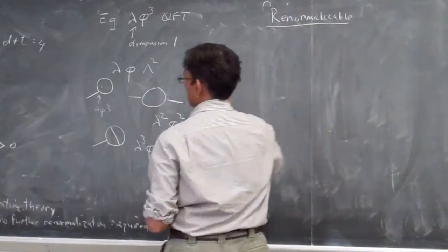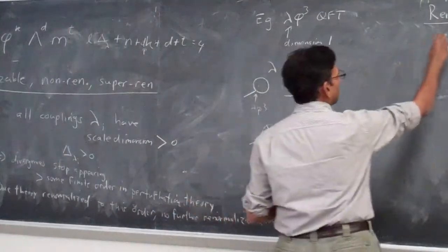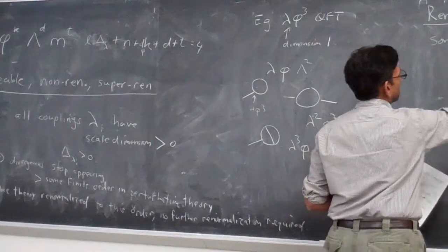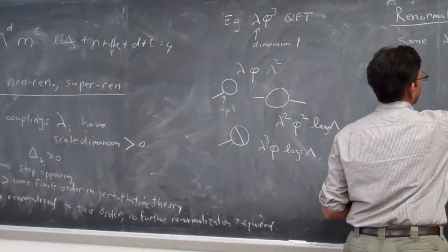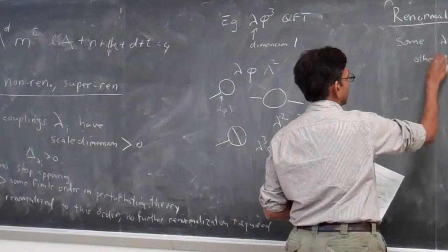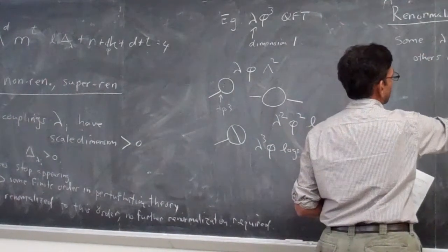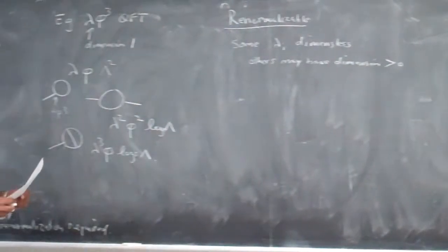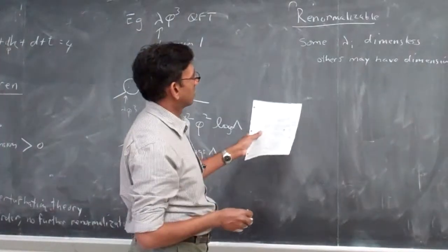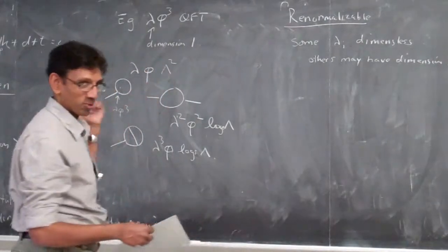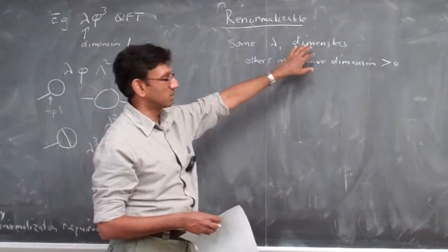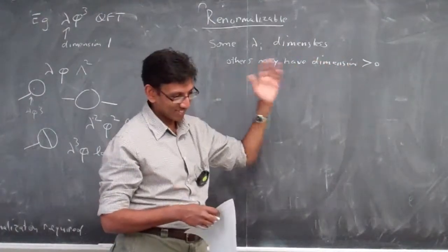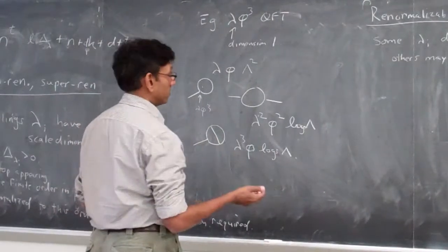The renormalizable case, seen by contrast, is where some lambda_i are dimensionless — others may have dimension greater than zero. But if all of them have dimension greater than zero, then you're super-renormalizable again. If even one is dimensionless — or several are dimensionless and some are positive dimension, or all are dimensionless — then the divergences in their worst form persist.